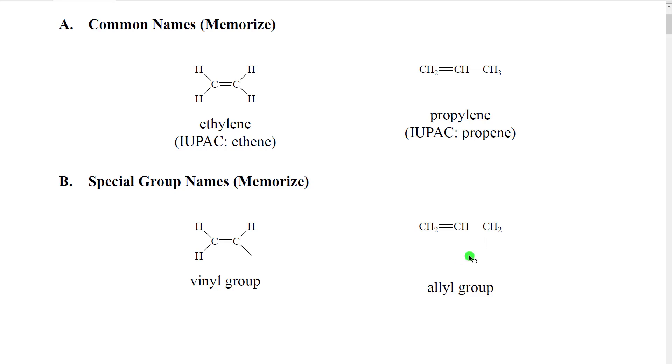These positions then where the substitution occurs are often named for this group. For example, when we have positions directly attached to a carbon-carbon double bond, we call them vinylic positions. When we have groups attached on a carbon adjacent to a carbon-carbon double bond, we say they are in allylic positions.